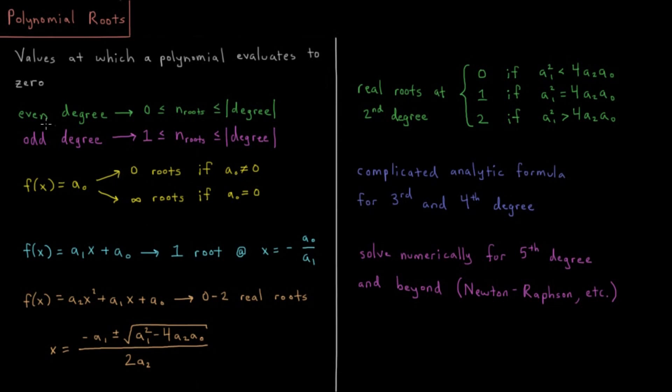And that makes sense because the degree of that is zero, and zero is even in this case. So we have 0 ≤ n ≤ 0, so we have zero roots for a constant non-zero function.